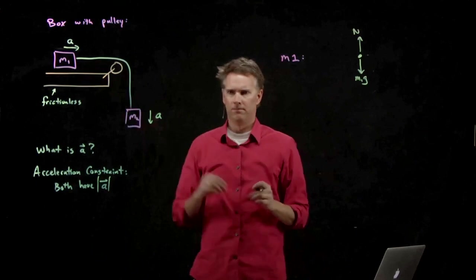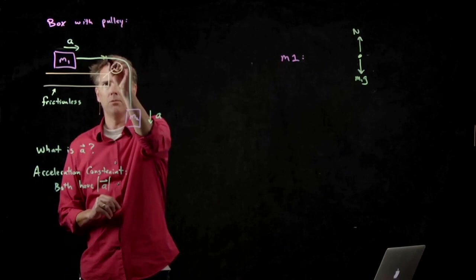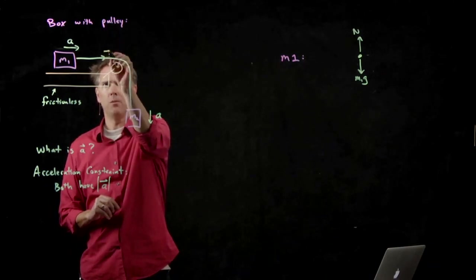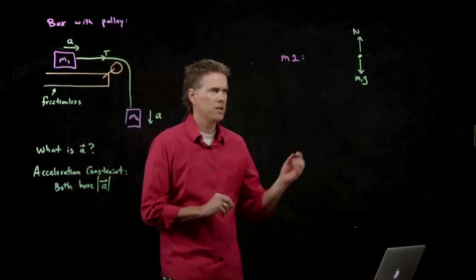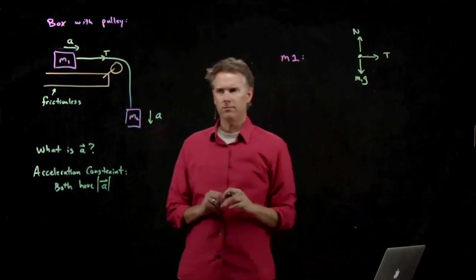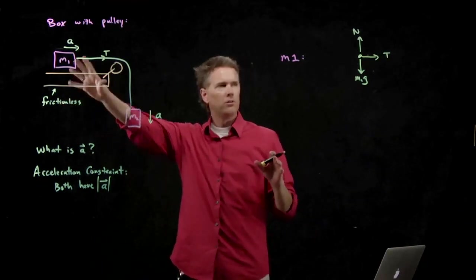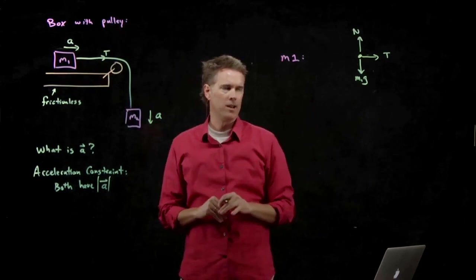What else? There's something pulling on it, namely this rope. And if we say that the rope has tension T, tension T is a force to the right. That's it. No friction. So that's all the forces that are acting on M1.